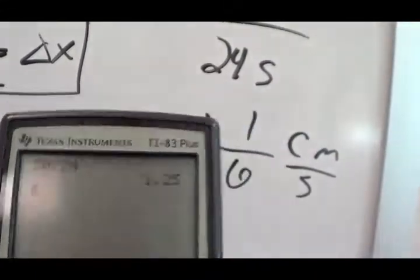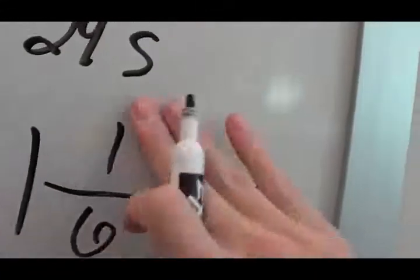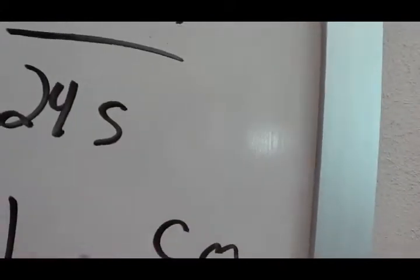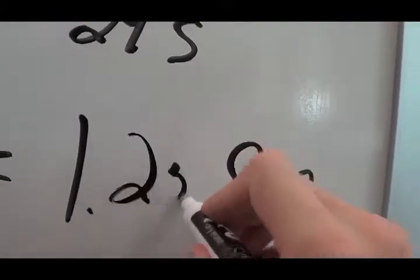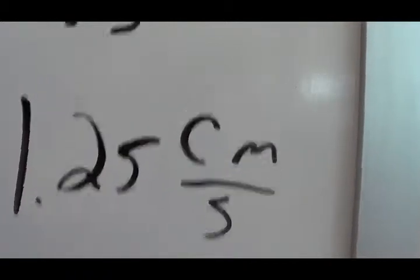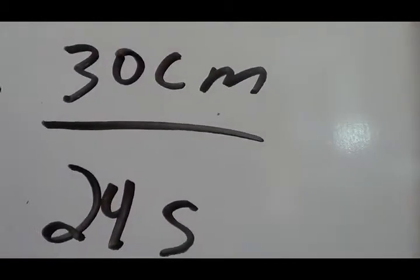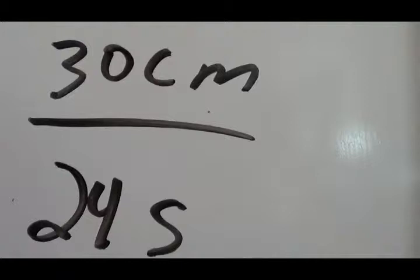Oh, I was way off. 1.25. Good thing I got the calculator. 1.25 centimeters a second. The reason I use centimeters a second is because the units in the equation were centimeters a second. That's all.